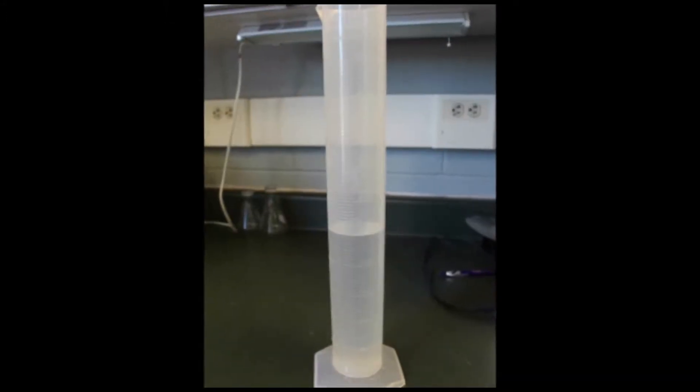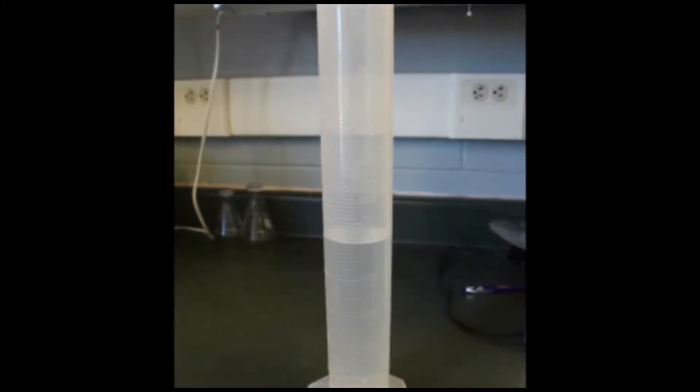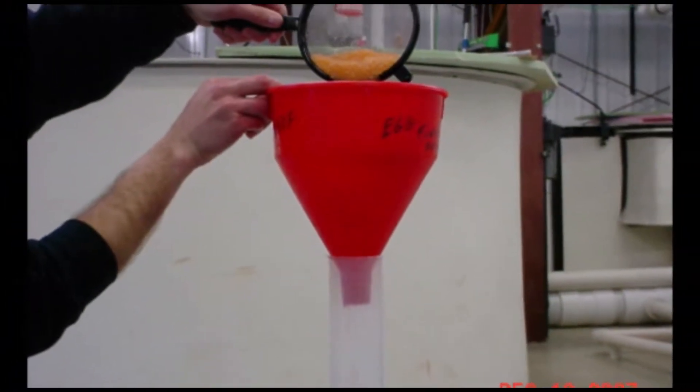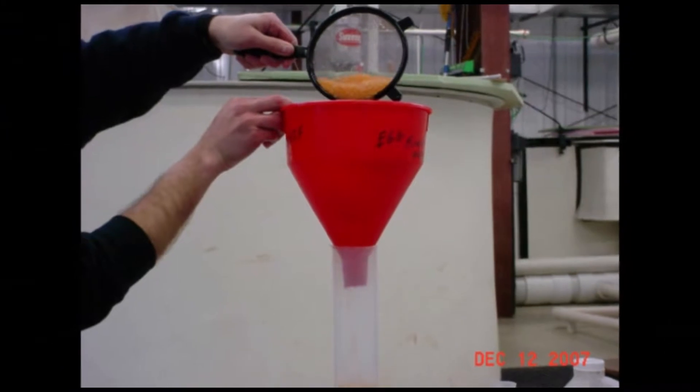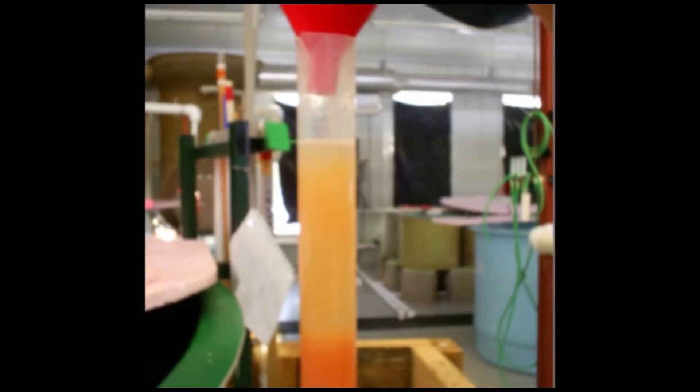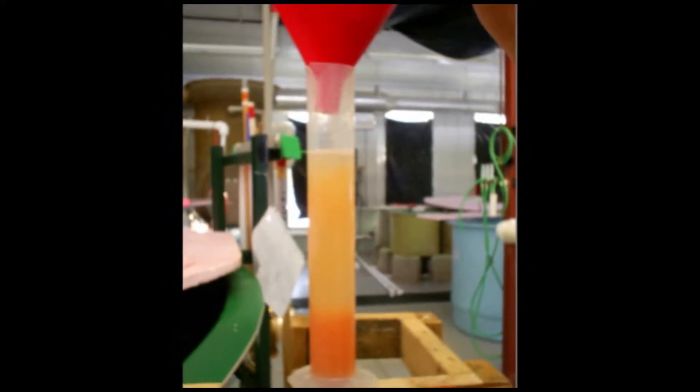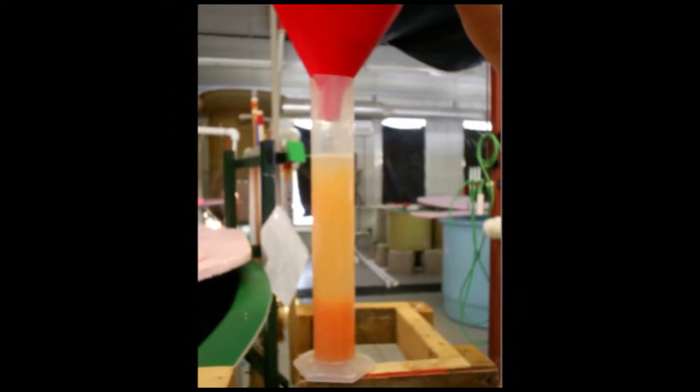This method involves filling a large graduated cylinder with water about half way to a known volume. The eggs are strained and funneled into the graduated cylinder of water. Make sure that all the eggs placed into the cylinder are submerged in water. This may have to be done several times depending on how many eggs are being quantified.